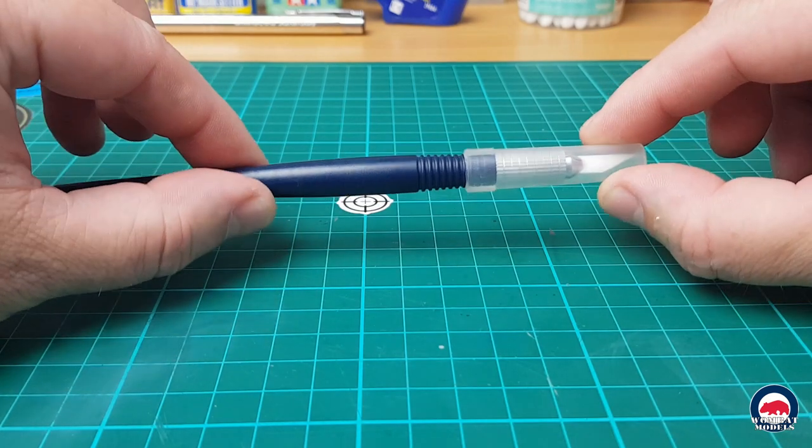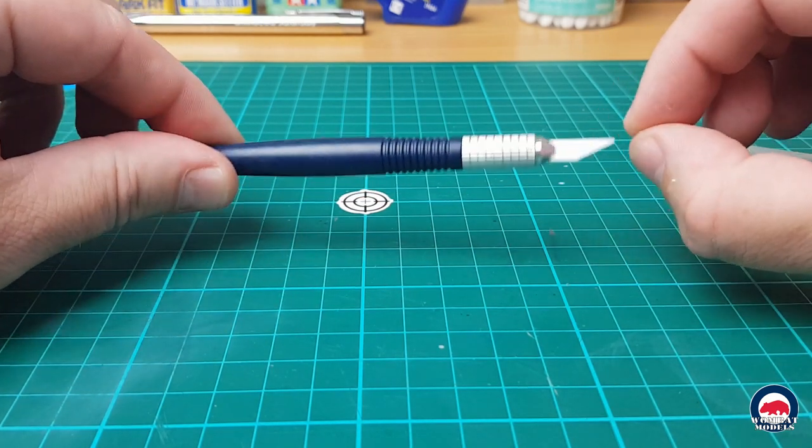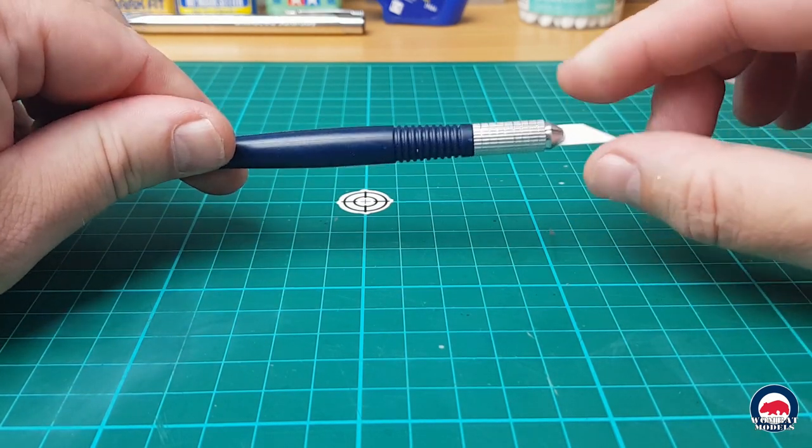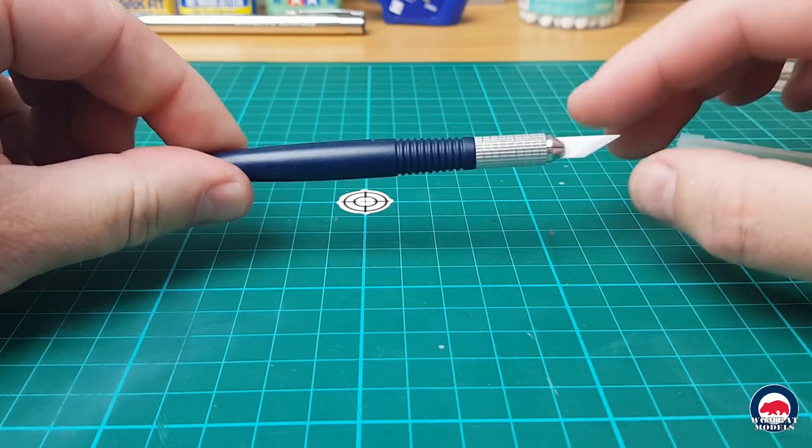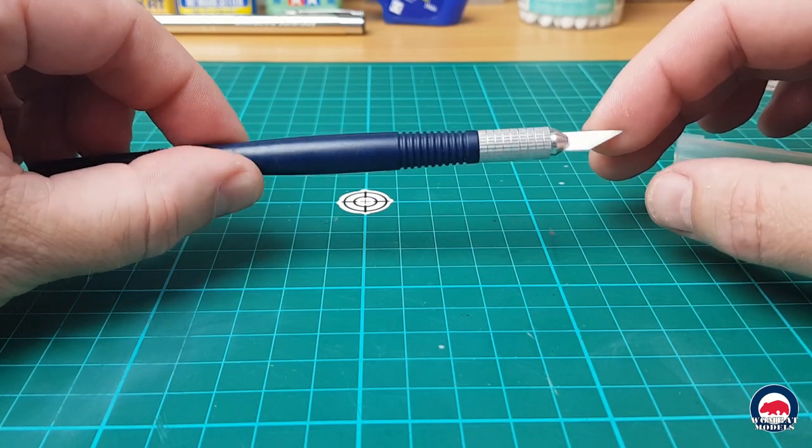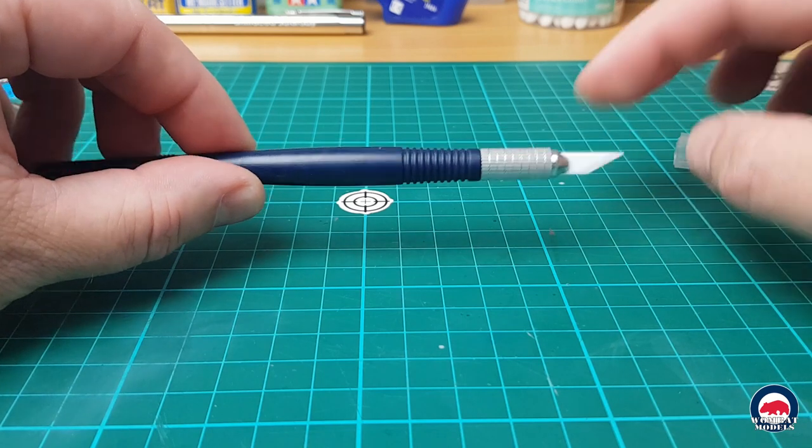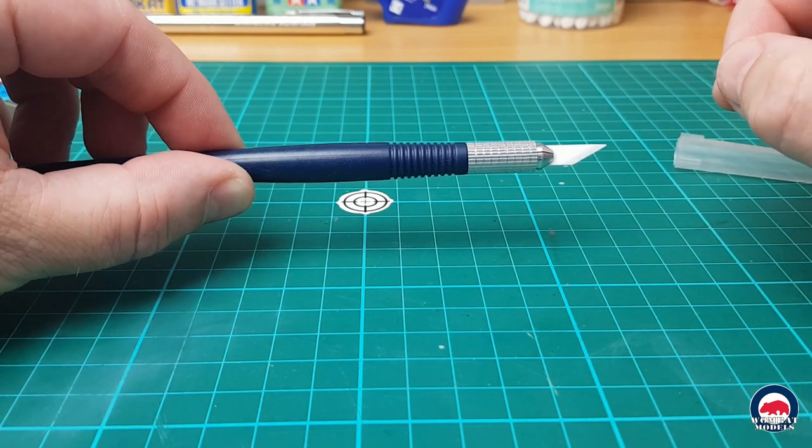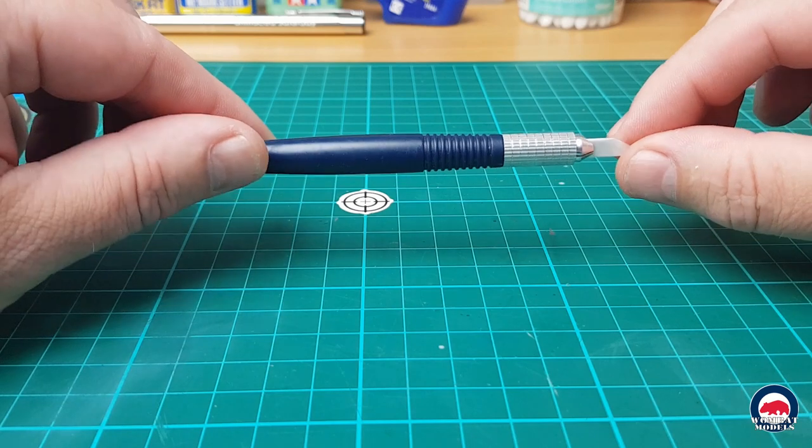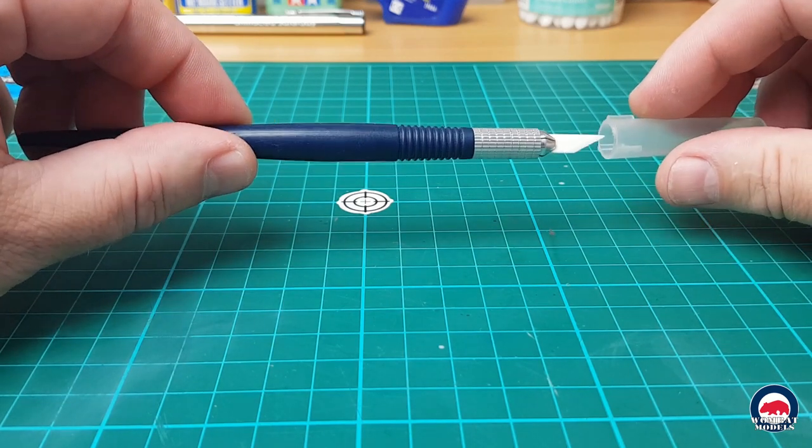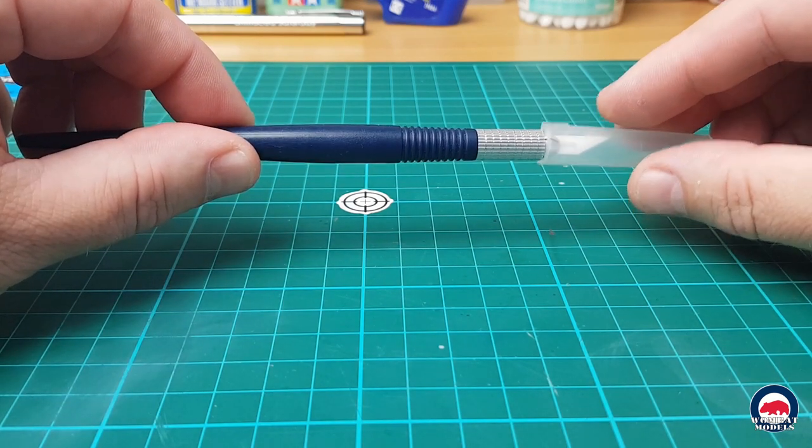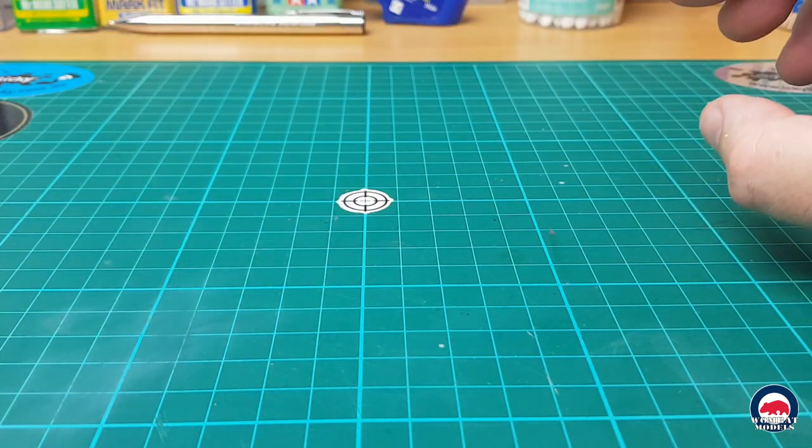So first up we have the SMS ceramic scraper. So this comes with a ceramic blade. Nice and safe, you can't cut yourself on that. It comes with a spare one when you buy it. These ceramic scrapers are perfect for cleaning up mold separation lines or seams on parts. And it can also be used for cleaning up some of the sprue nibs that are left over, but it's a really useful tool that I use on everything.